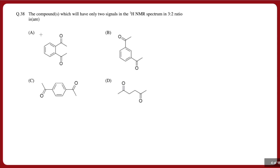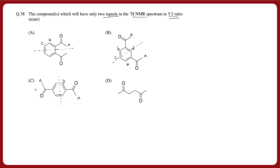The next question asks: which compound will have only two signals in the proton NMR spectrum in a 3:2 ratio? Looking at option A, there are protons of type A, B, and C — three types. For option B, with a plane of symmetry, there are protons of type A, B, C, and D — four types. For option C, there is a plane of symmetry giving proton types A and B — the A type methyl groups give 6 protons and B type gives 4 protons, giving a ratio of 3:2.